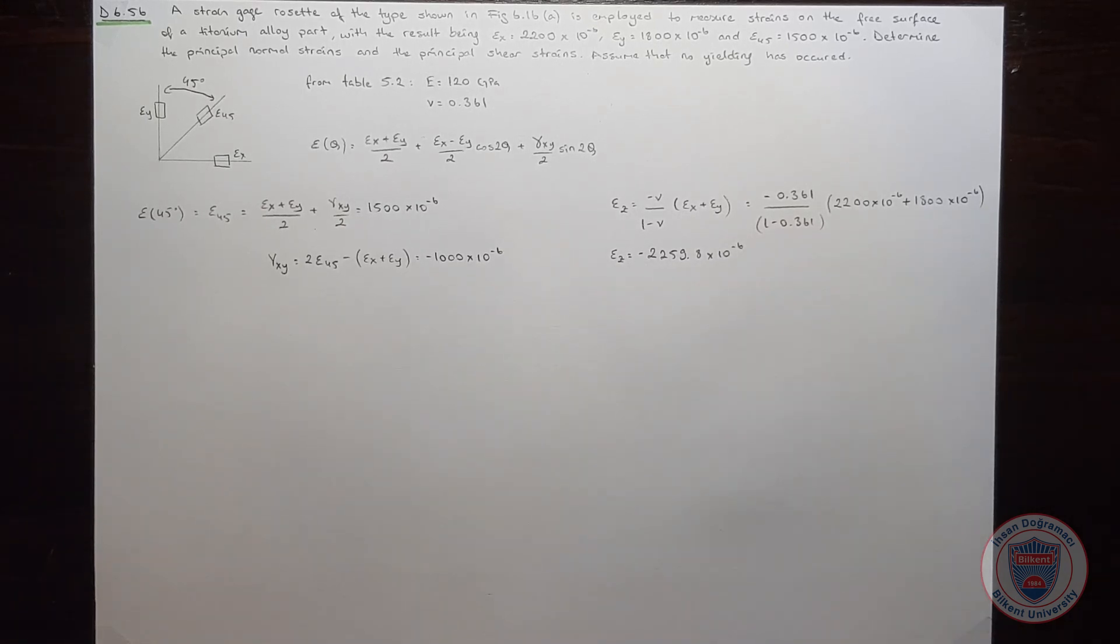Since we know epsilon x, epsilon y, epsilon z and gamma xy, we can now calculate the principal strains. Let's start with epsilon 1.